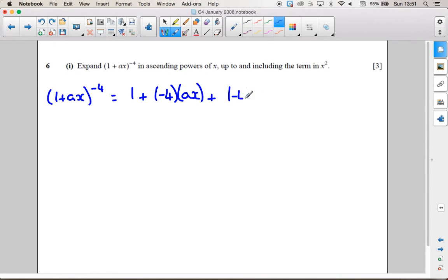Next term is going to be minus 4 times minus 5, because it's n times n minus 1, times ax squared over 2. And that's enough because that's an x squared term there.